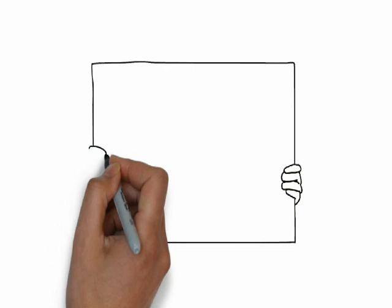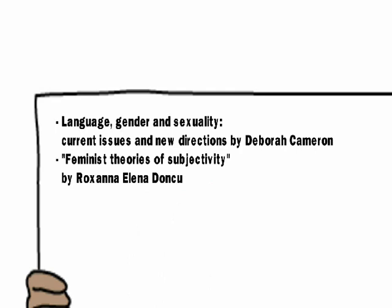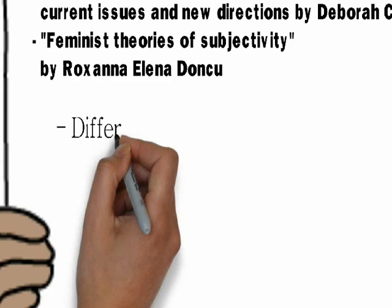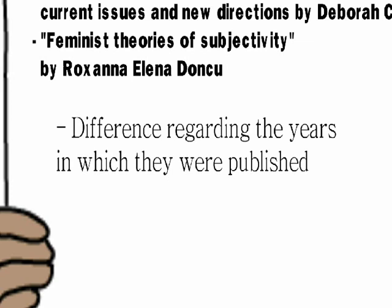As we analyze the texts — Language, Gender and Sexuality: Current Issues and New Directions by Deborah Cameron, and Feminist Theories of Subjectivity: Judith Butler and Julia Kristeva by Roxana Elena Donku — we came across similar themes related to how gender identities have developed throughout history. What drew our attention the most is the fact that if you compare Cameron's and Donku's papers, you can clearly see a difference regarding the years in which they were published, 2005 and 2017. However, if you look deeply into both documents, there is not a noticeable disagreement within their analysis and the topics they approach.